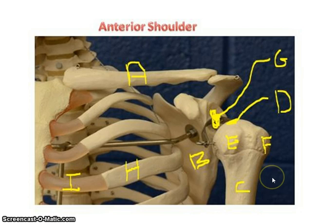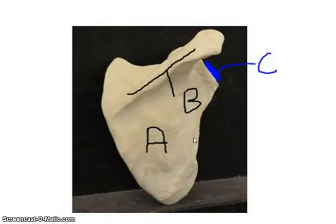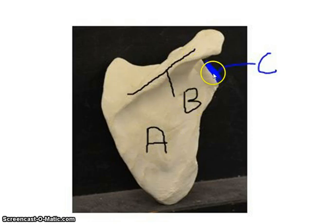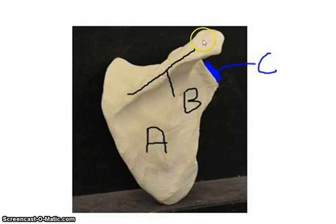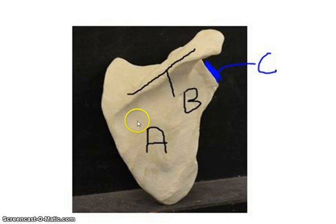Now we're going to look at the scapula from a posterior view — so if you were standing behind a person and could see through them, this would be the scapula. This is the glenoid cavity where the head of the humerus would articulate. This is the spine of the scapula, and you can feel this — if you put your fingers on your upper back you can follow that spine of the scapula all the way up.